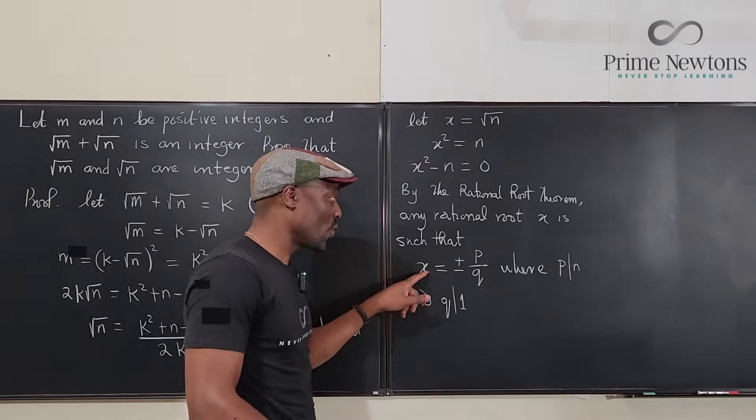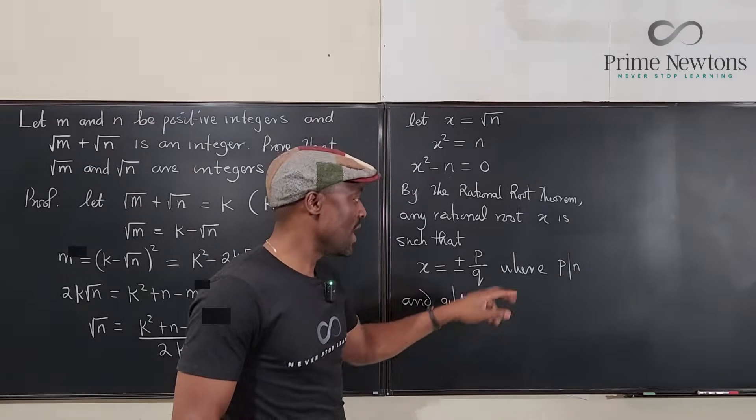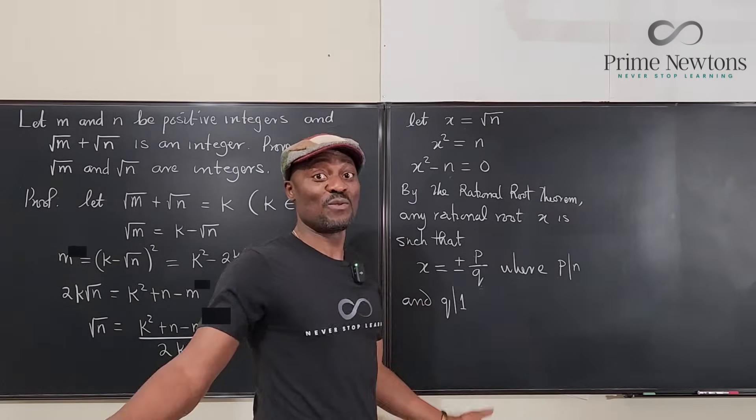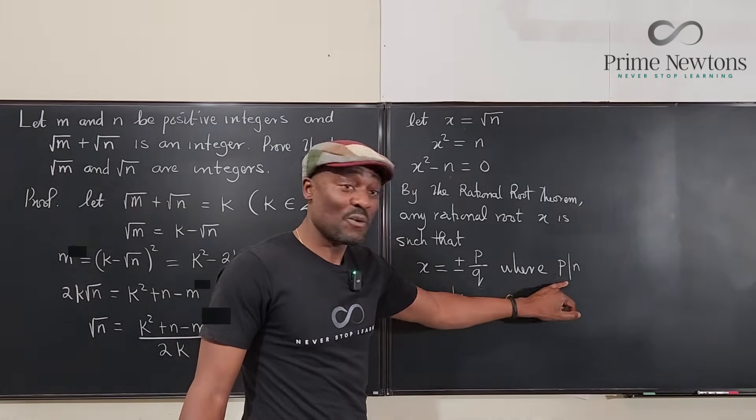So when you write any answer, your answer is going to be ±p/1. Remember p is an integer according to the rational root theorem. That's how we choose it.